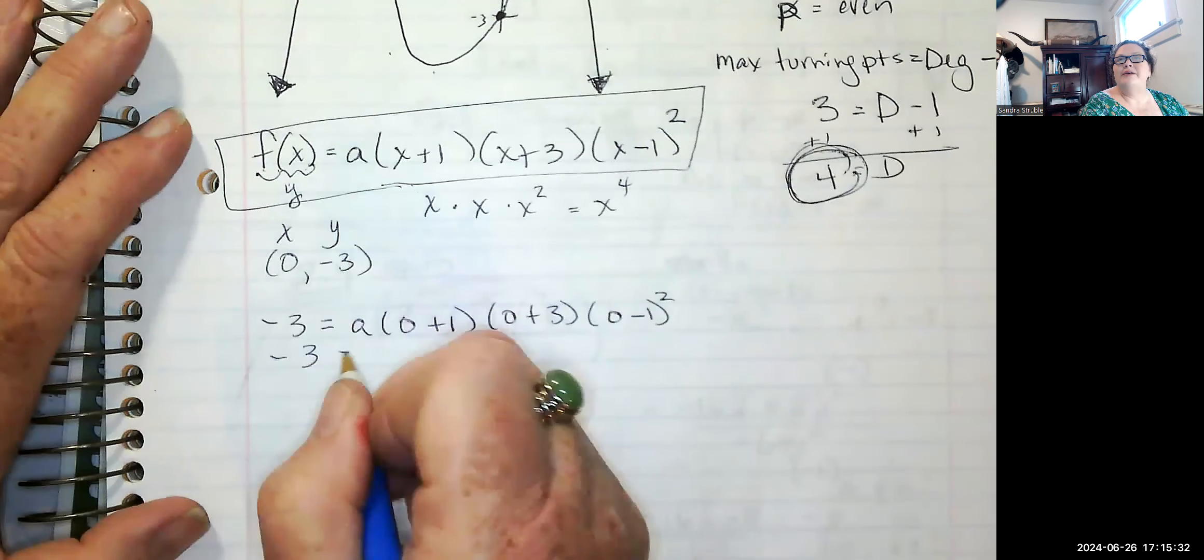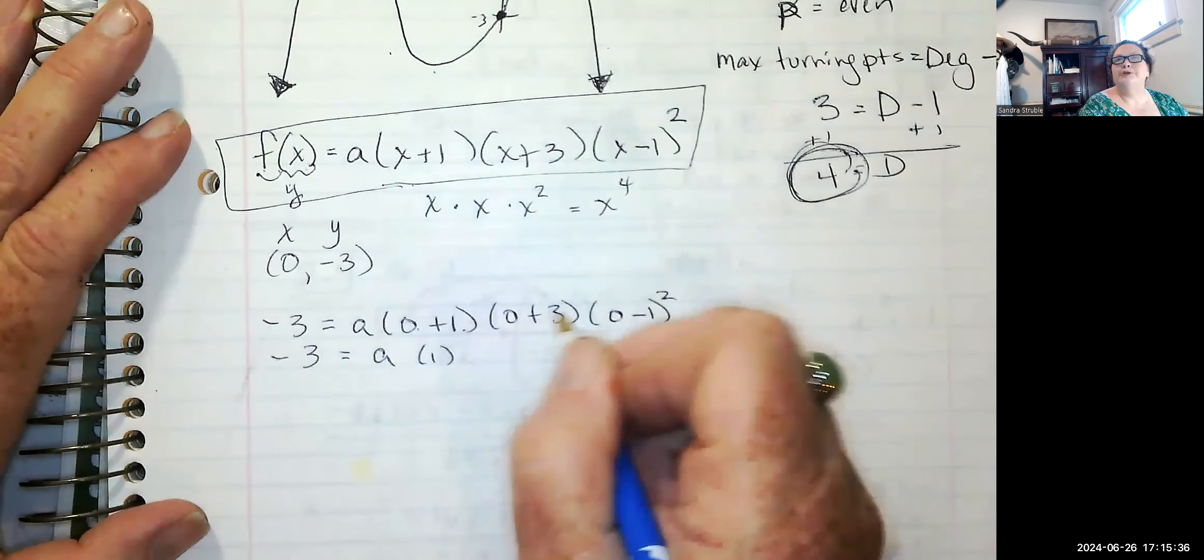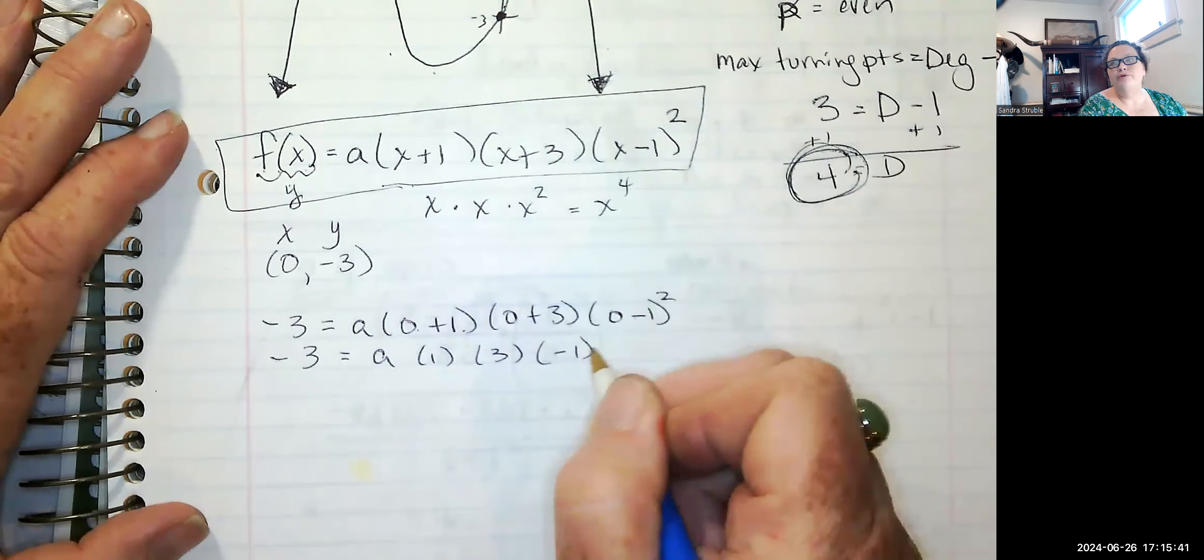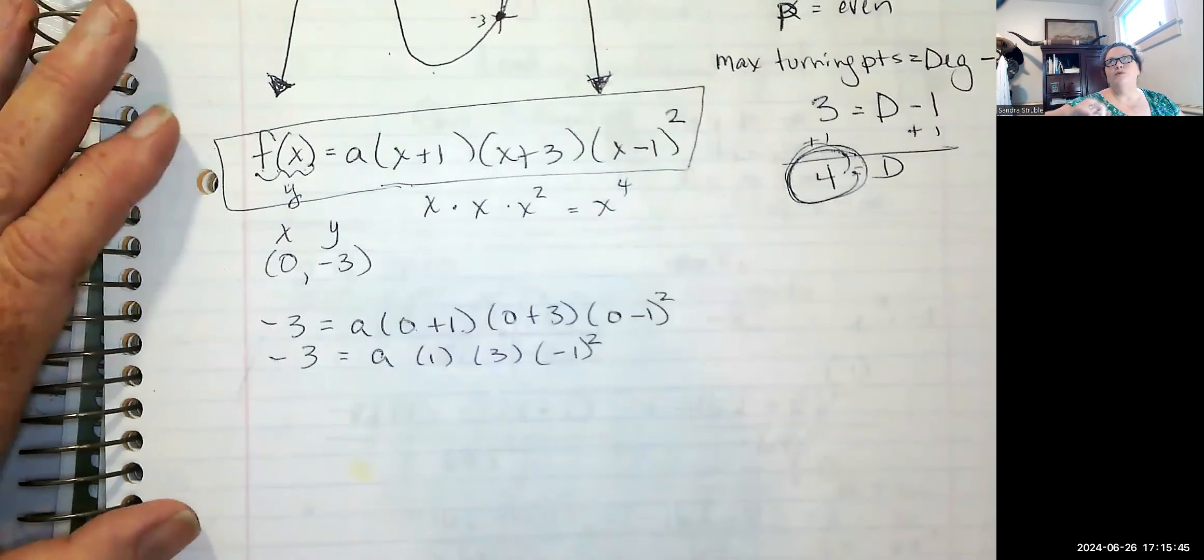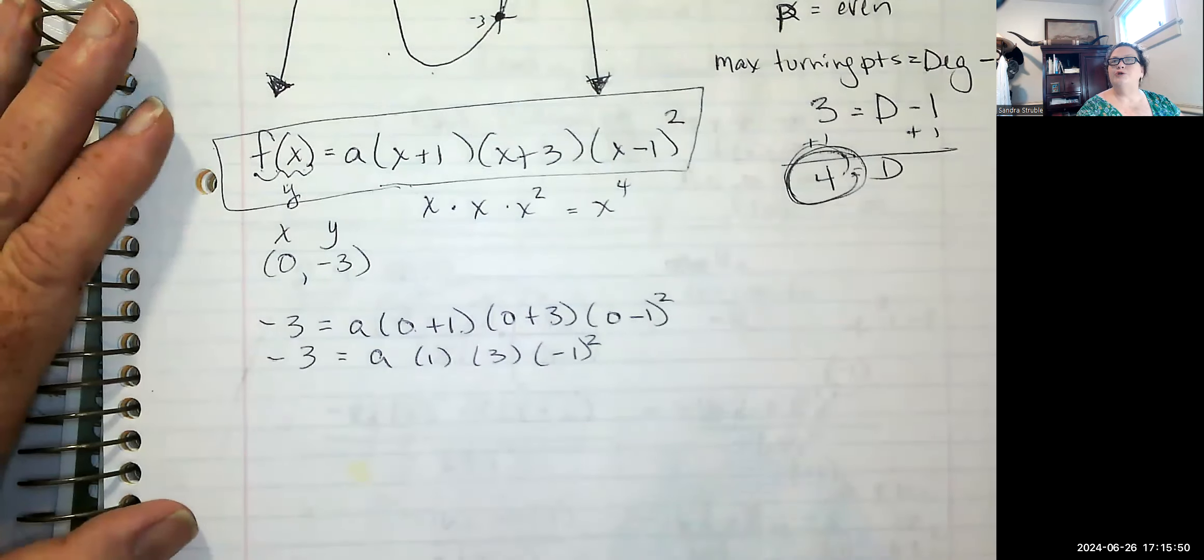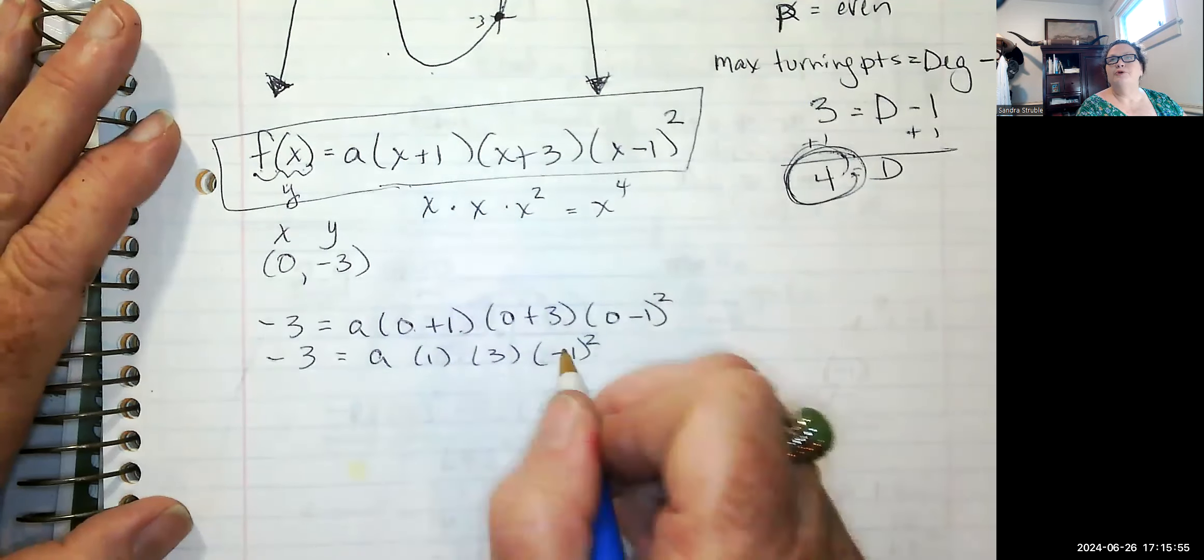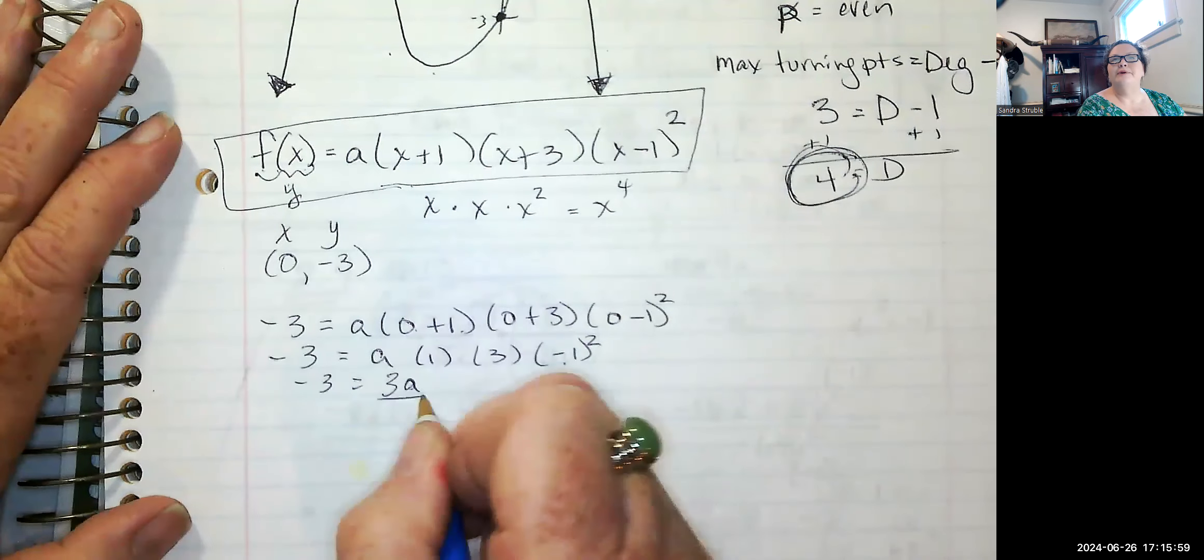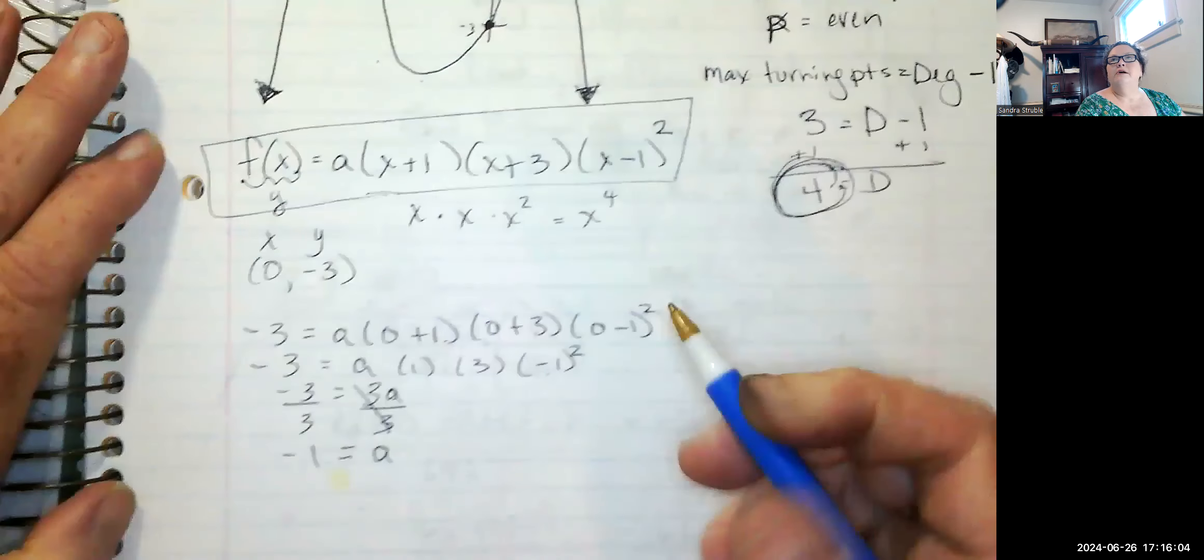Now I'm just going to map it. Zero plus one is one. Zero plus three is three. Zero minus one is negative one squared. Be careful with this, y'all, because if you just put this in your calculator as negative one squared, you're going to get negative one. You've got to use parentheses, but you should already know that negative one squared is just one. So these are both ones. We've got three A is equal to negative three. Divide both sides by three. And A is equal to negative one.